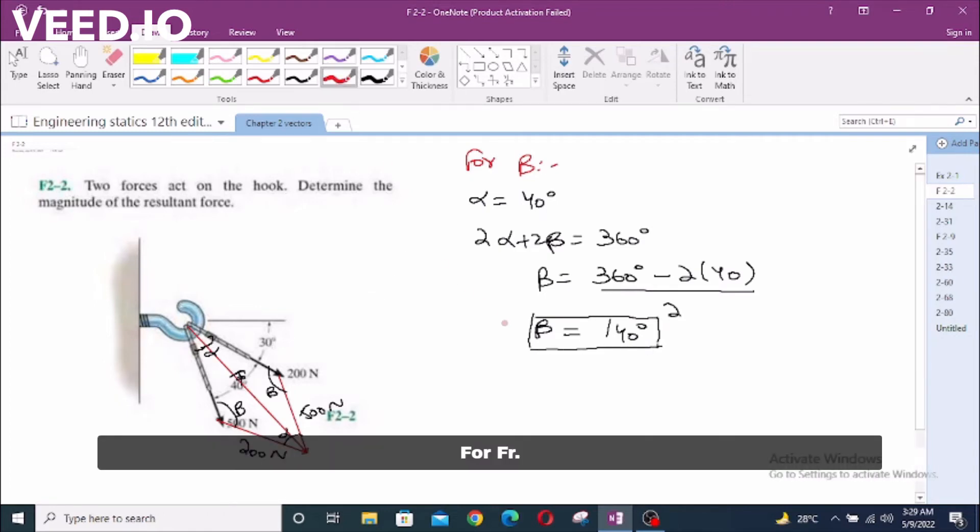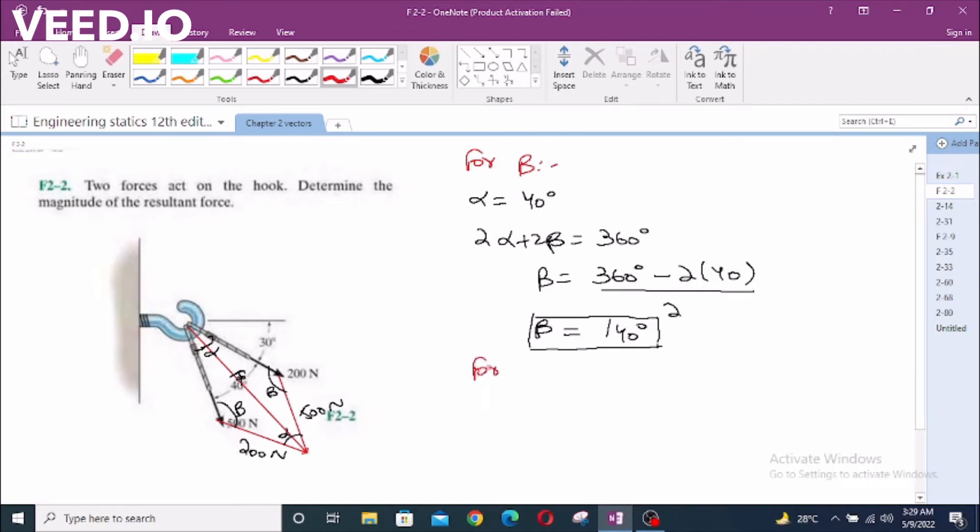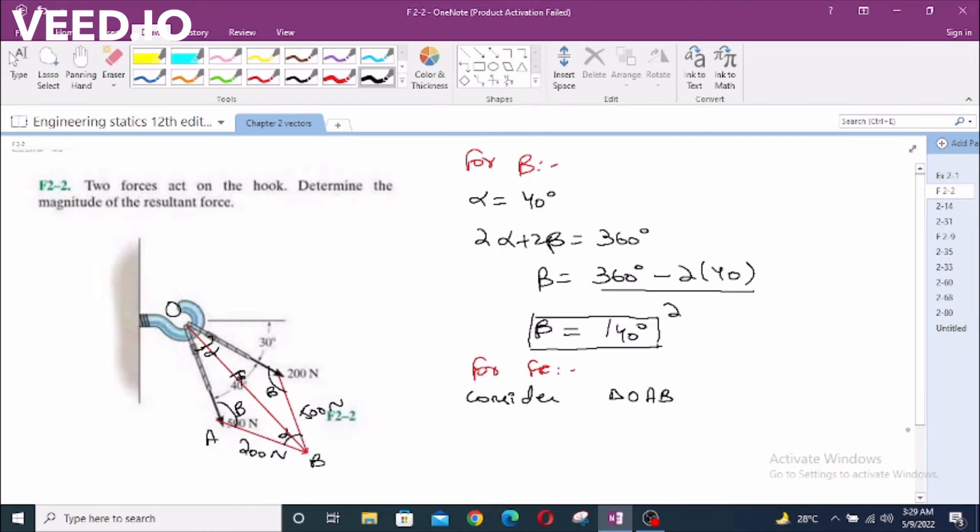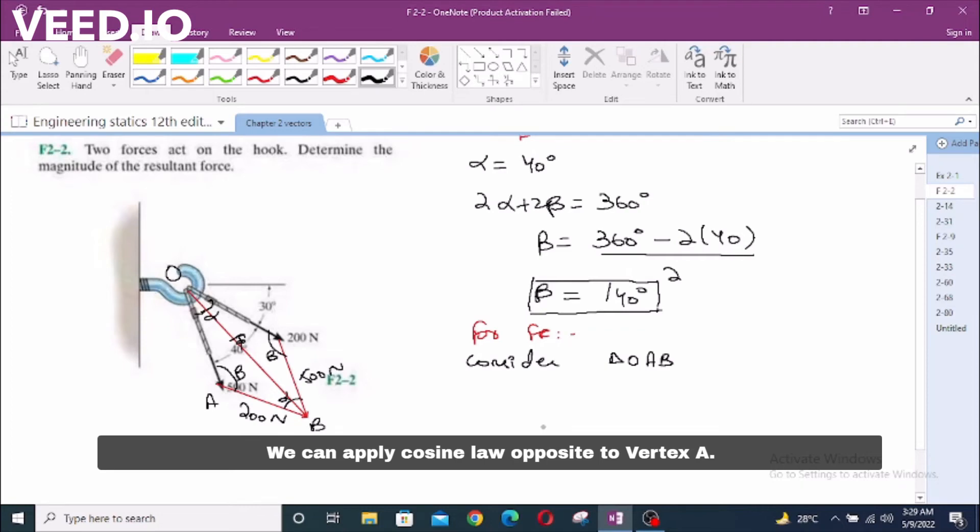For F R, consider triangle O, A, B. We can apply cosine law opposite to vertex A.